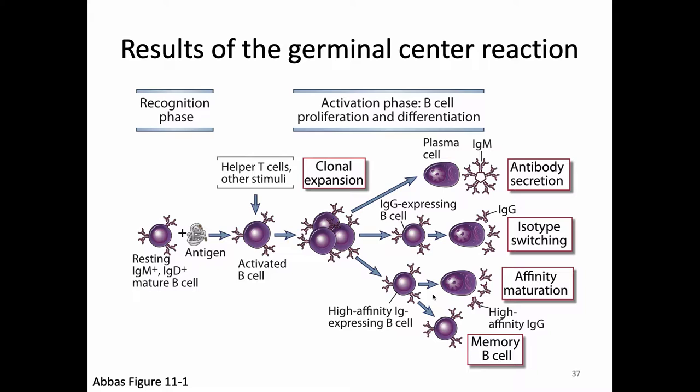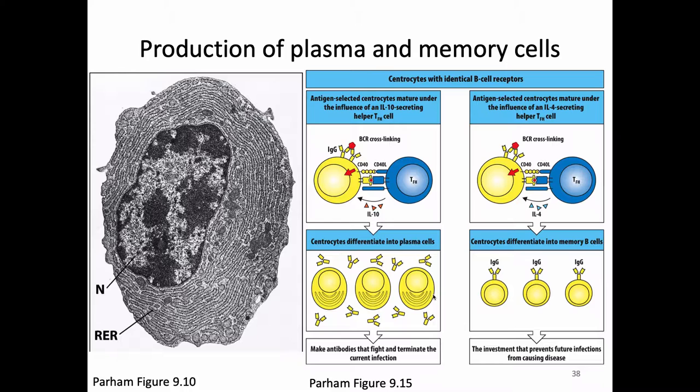Along with isotype switching, we also see that B cell differentiate into a more specialized type of B cell. In some cases these can be memory B cells, which are specialized to live for a really long time so that they're ready for future infections. They also have a somewhat different threshold for activation — they're activated a bit easier because they've been told they're useful.